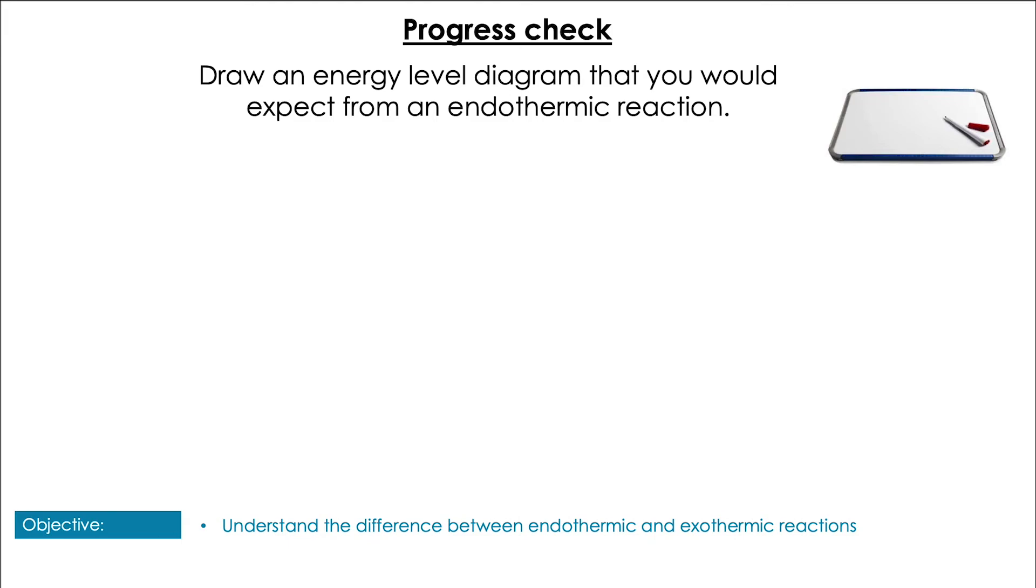Next question then: draw an energy level diagram you would expect from an endothermic reaction. Pause the video. Starting off by drawing your axes and labeling them progress and enthalpy, we're going to start with the reactants. Now it's endothermic, so we're going to absorb energy from the surroundings, so the products will have a higher enthalpy than the reactants, which means we have a delta H that is positive.